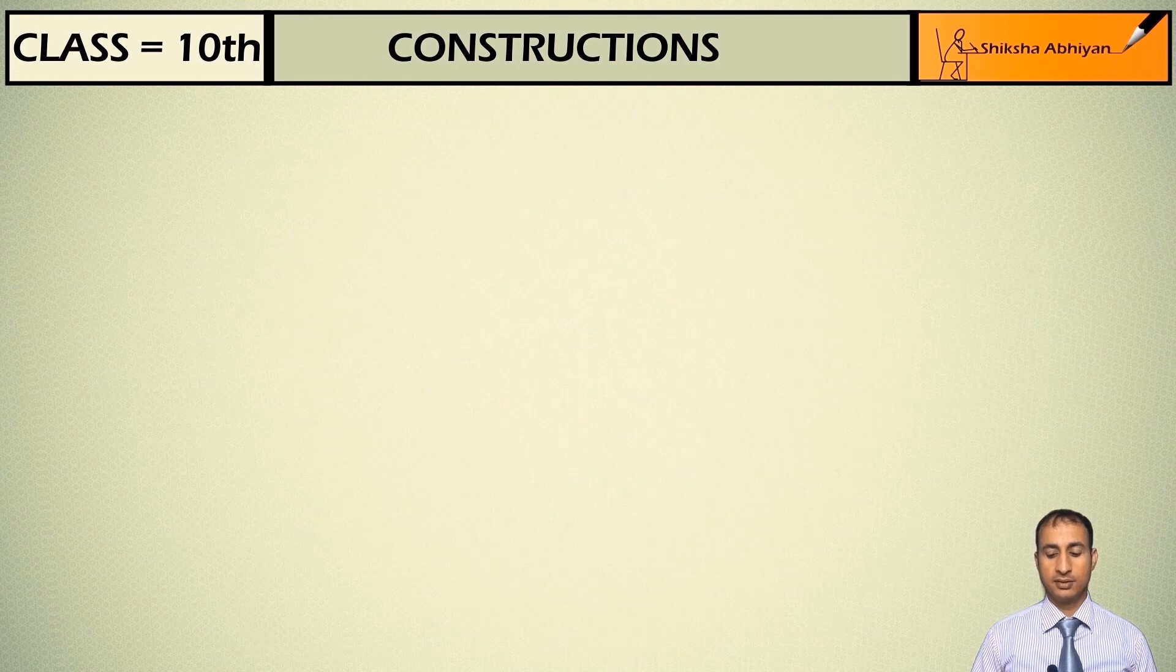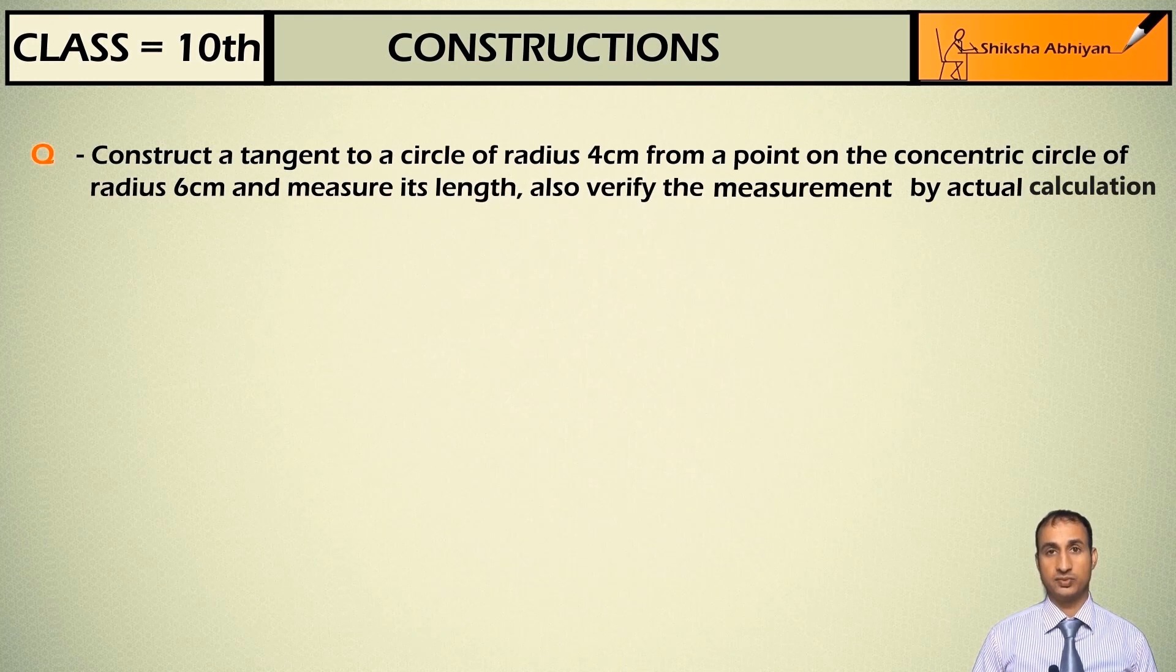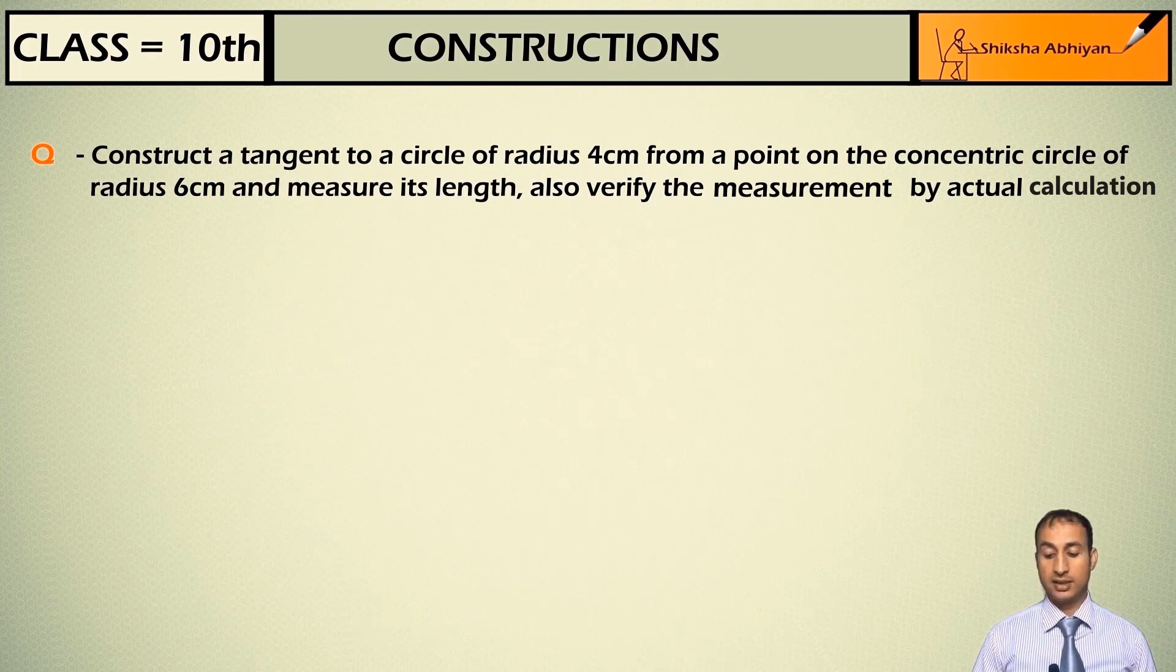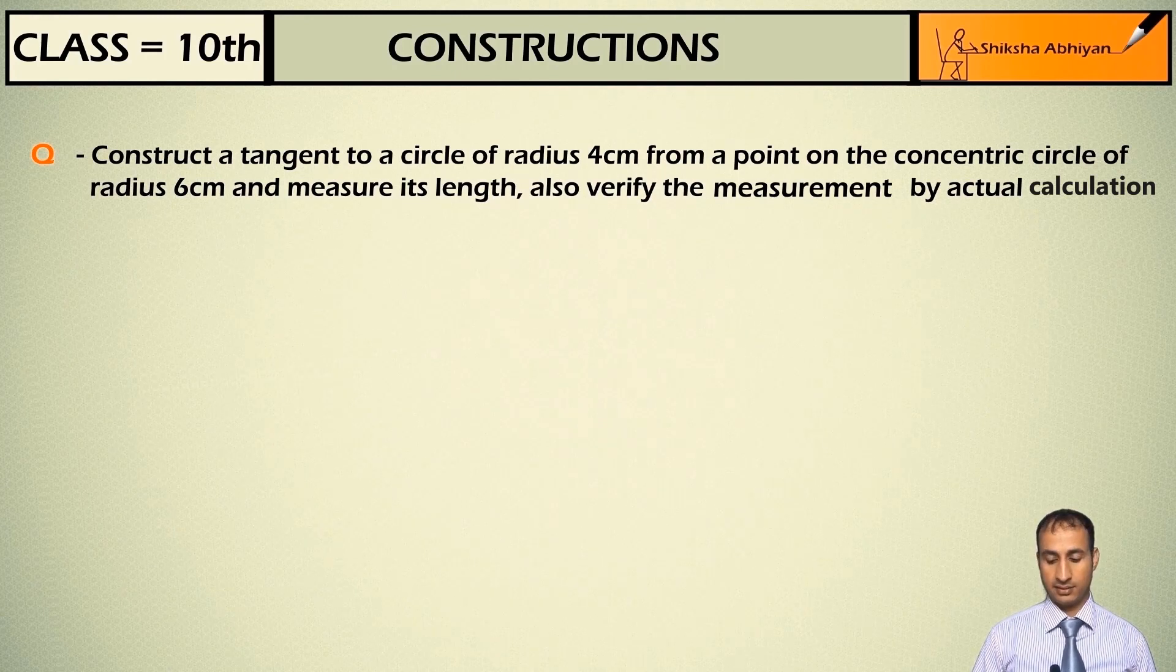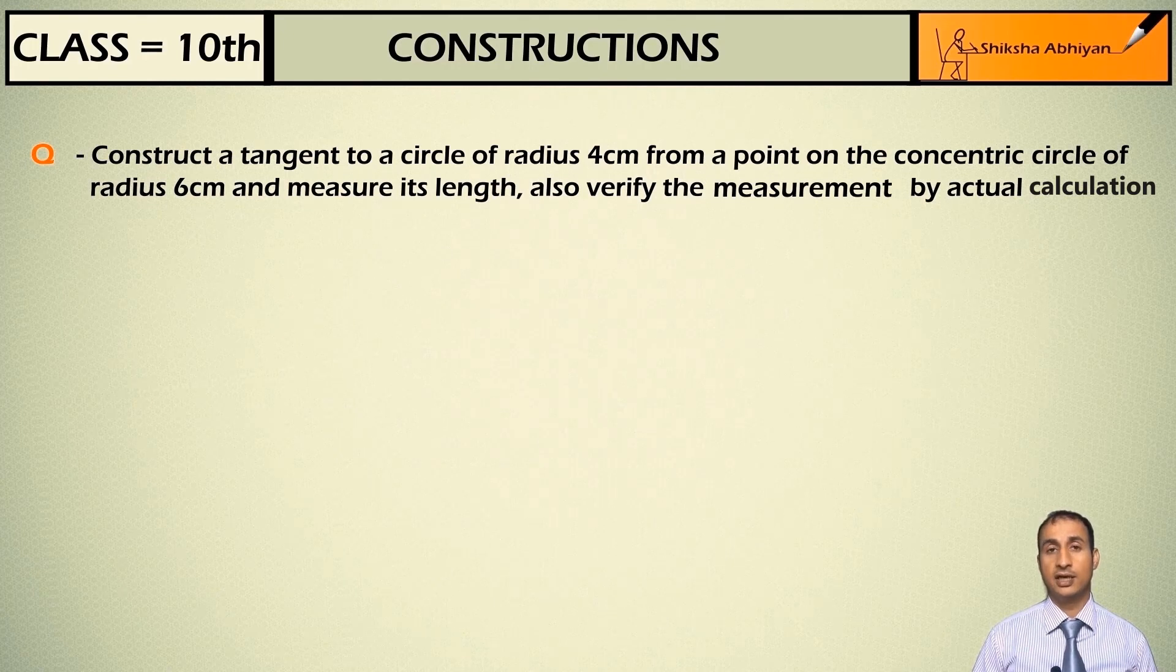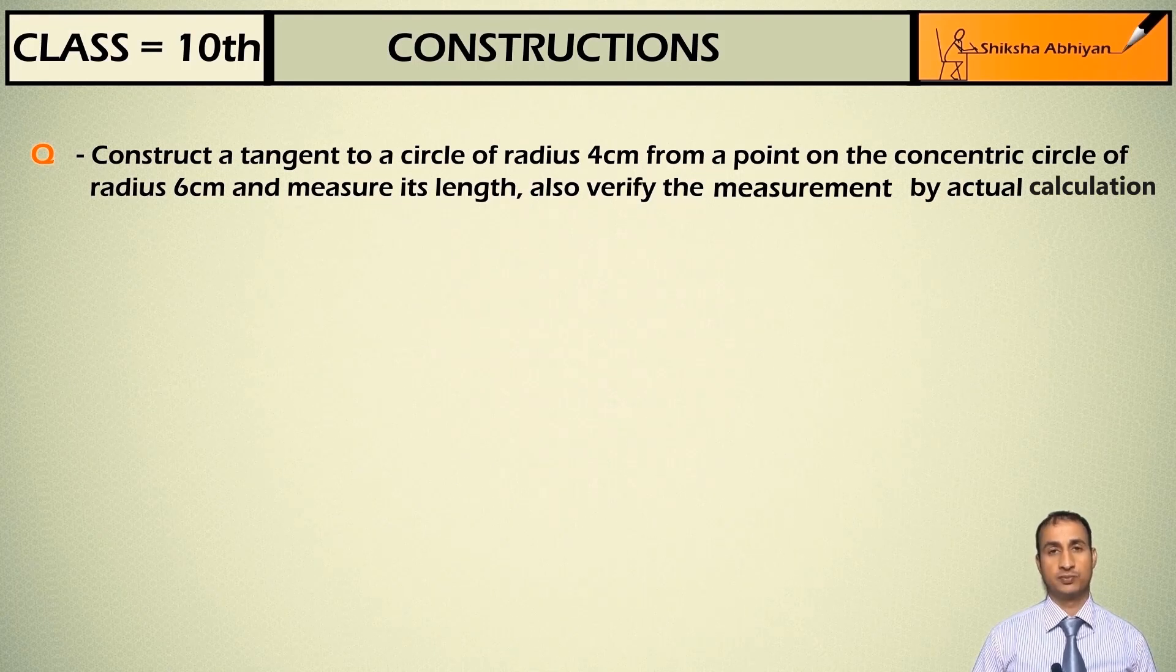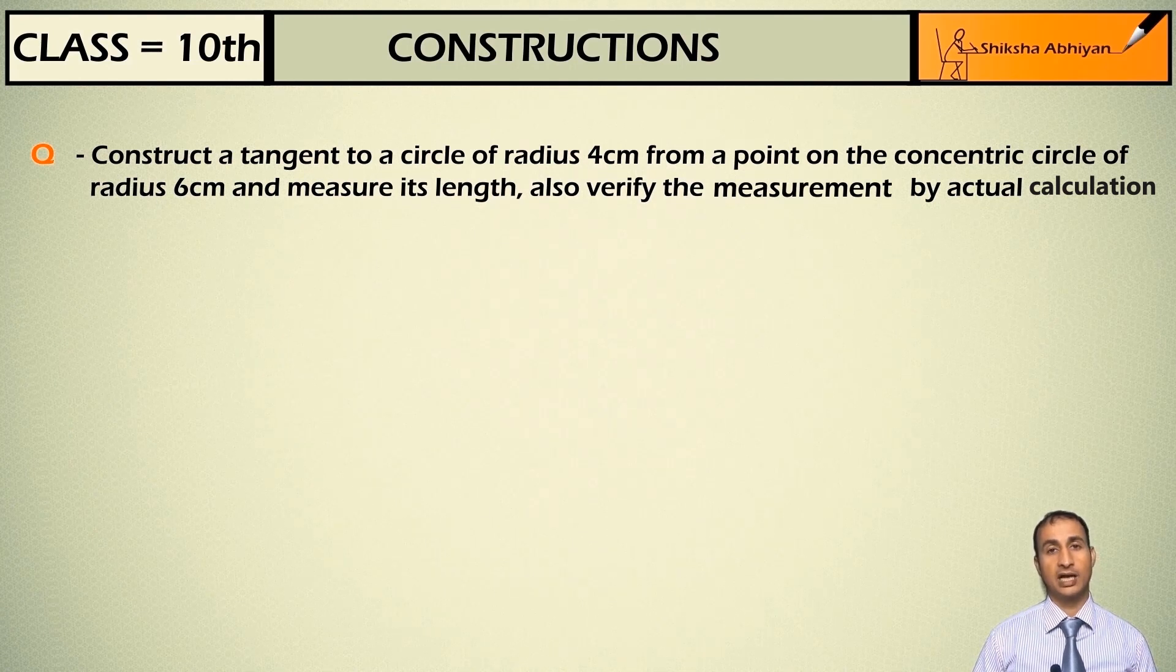Students, see the first question: construct a tangent to a circle of radius 4 cm from a point on the concentric circle of radius 6 cm and measure its length, also verify the measurement by actual calculation. We have a 4 cm circle to draw a tangent and the point is on a concentric circle which is 6 cm. We have to draw and then we will tell you the length of the tangent by calculation.